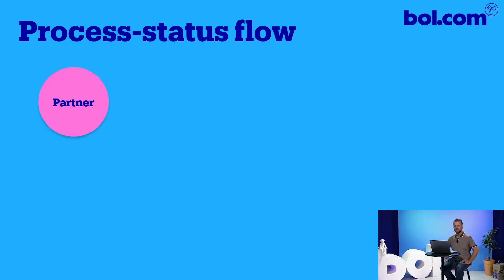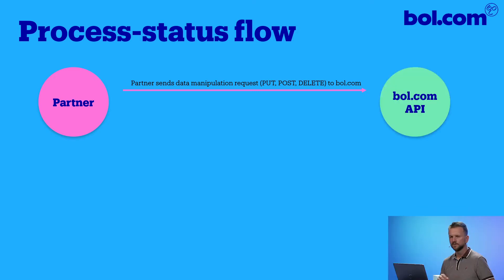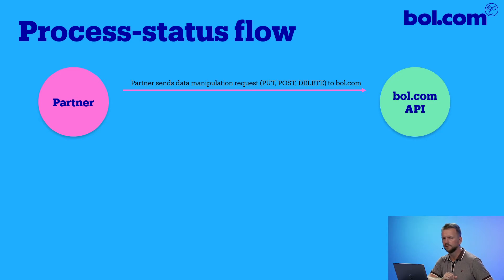As you may or may not know, all the requests that you send toward our API, such as PUT, POST, or DELETE, are handled asynchronously. This means all the requests will be stored within a queue. When your request gets to be the first in line, it will be forwarded to another service within the bol.com landscape.